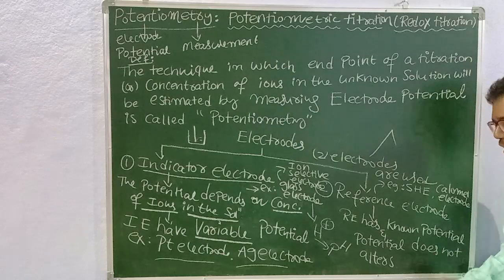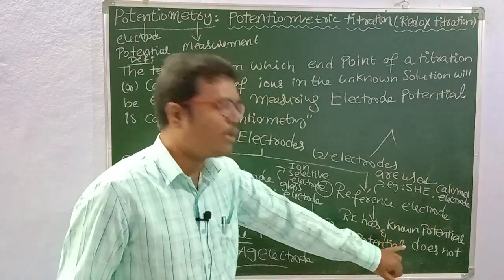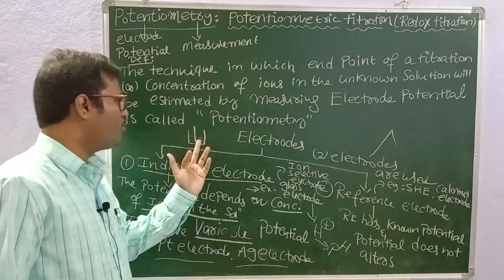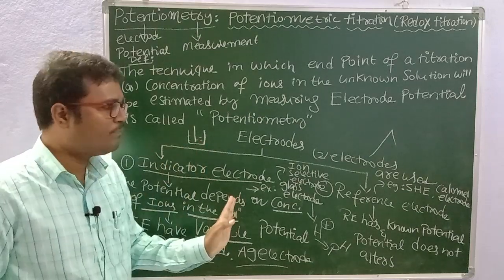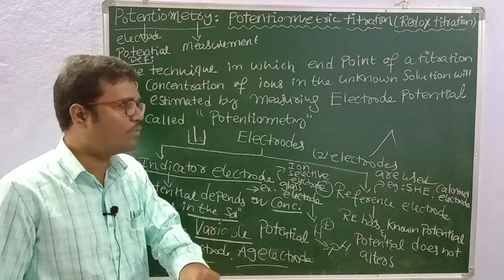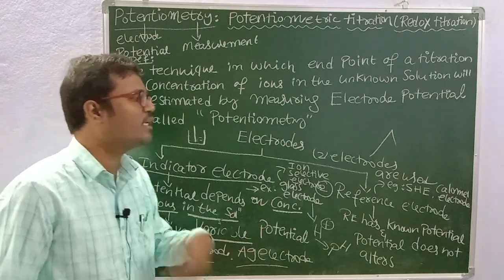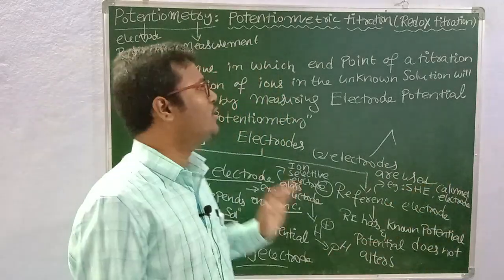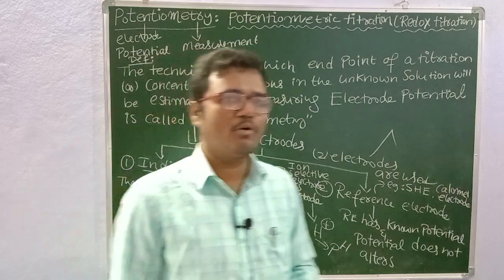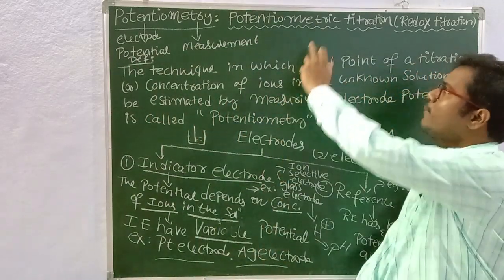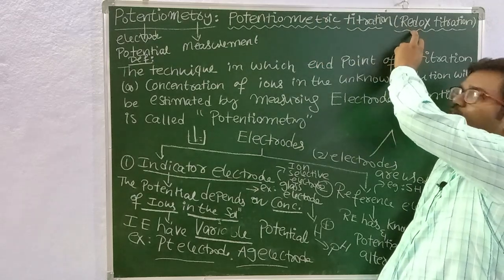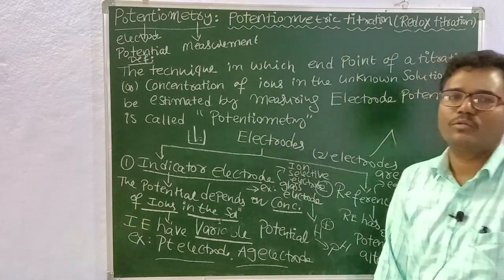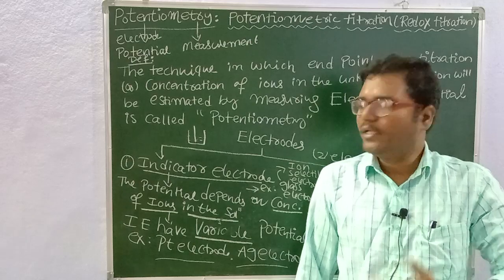The reference electrode has a known or fixed potential that does not alter. Potentiometry is used in geometric titrations, including redox titrations. Thank you for watching this video.